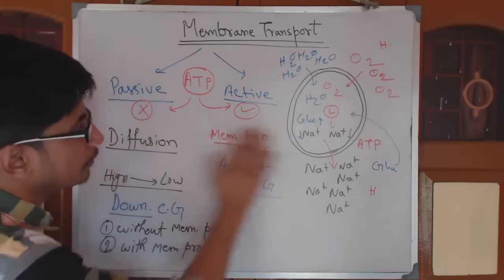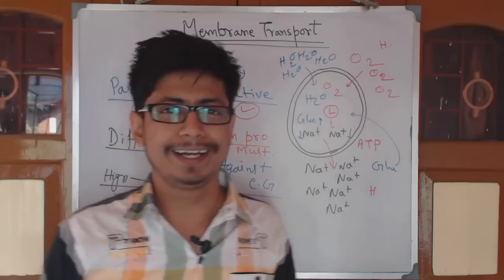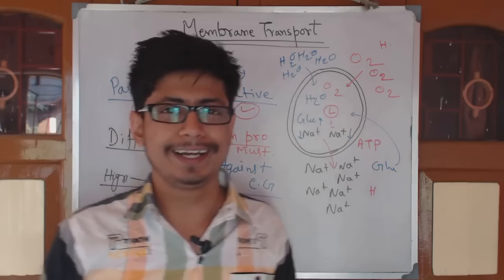In summary, these are all the different types of membrane transport: passive transport (simple diffusion and facilitated diffusion) and active transport (primary and secondary). Hopefully you liked this video — please hit the like button and subscribe to the channel for more videos like this.